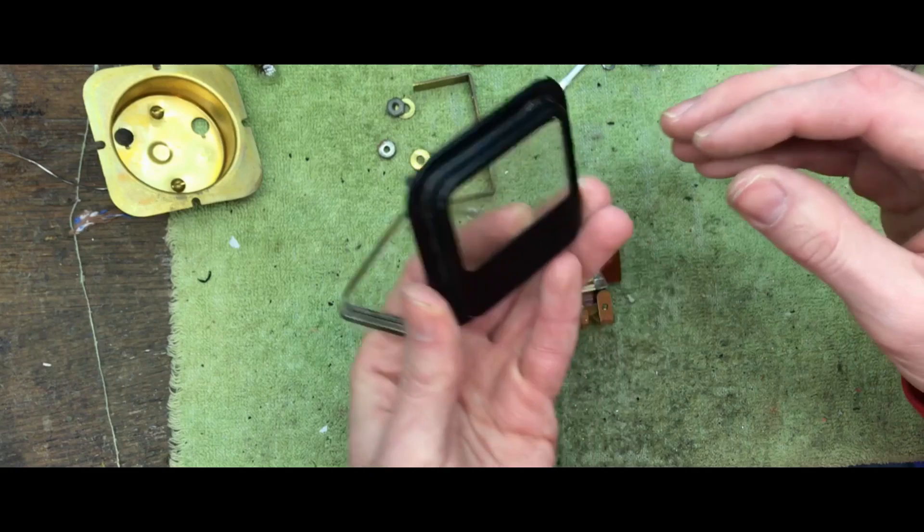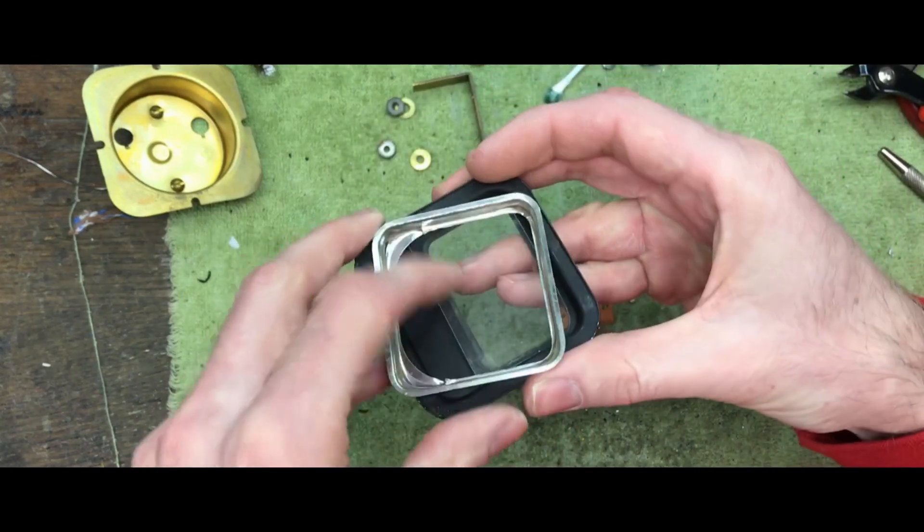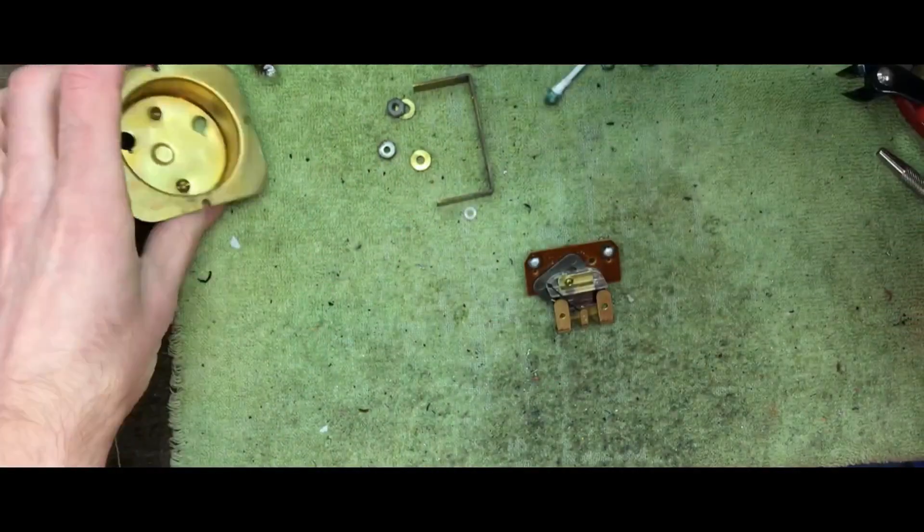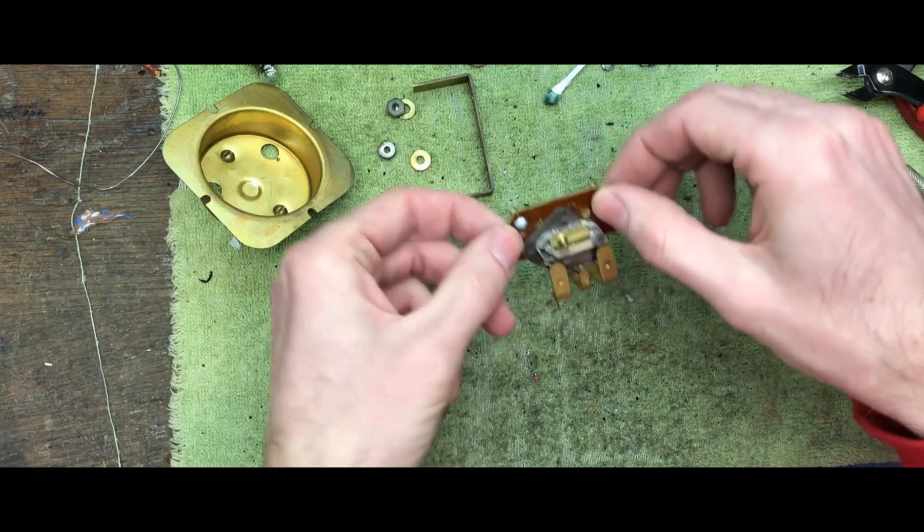This is the meter glass. Actually this will allow me to clean the glass so that's kind of nice. And this is the housing. And then this is the mechanism right here.